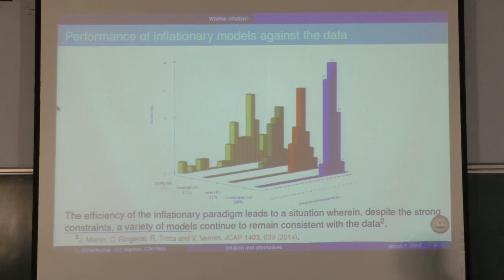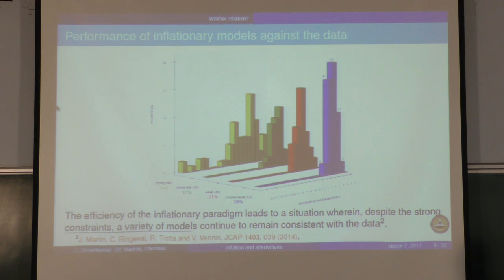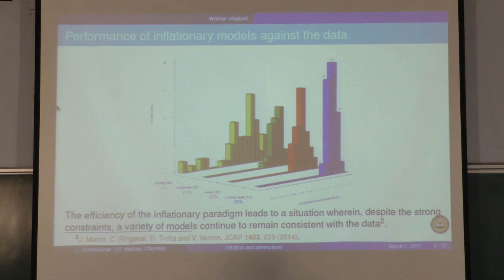Certain types of small-field models, which lead to a small tensor-to-scalar ratio, are quite consistent with the data. There has been a systematic effort by Jerome Martin and his co-workers where they compared about 200 inflationary models with the data. They have Bayesian evidence for each of these models. The class of models very similar to the original R plus R-squared model of Starobinsky work well against the data.